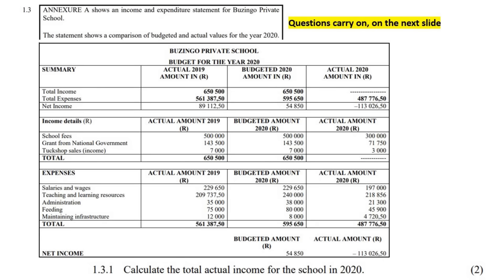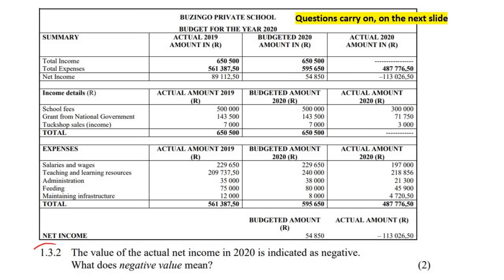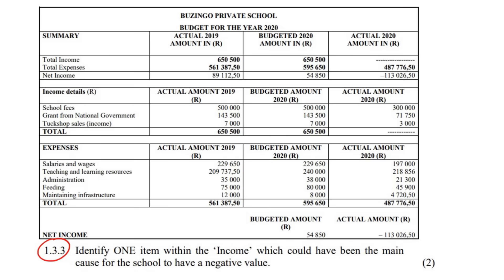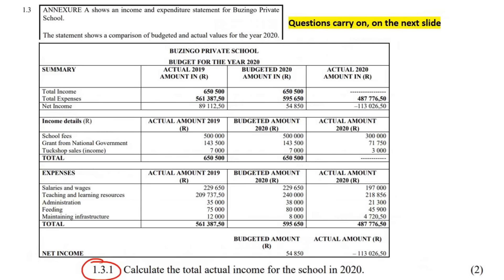So this question will carry on. Here I've got Annexure A, which is what I've added over here. The first question is down here, then there's going to be a second question, and a third question. So let's start. It says that Annexure A shows an income and expenditure statement for Bazingo Private School. The statement shows a comparison of budgeted and actual values for the 2020 year. Let's just read that again.